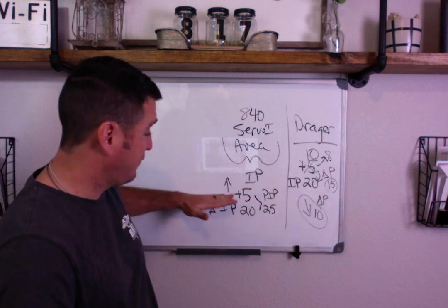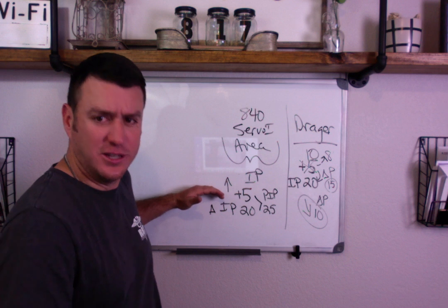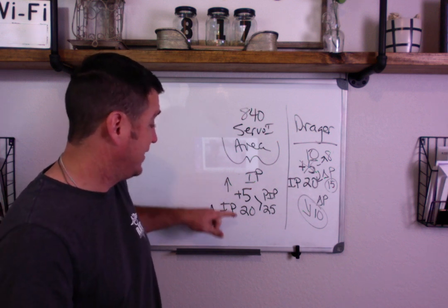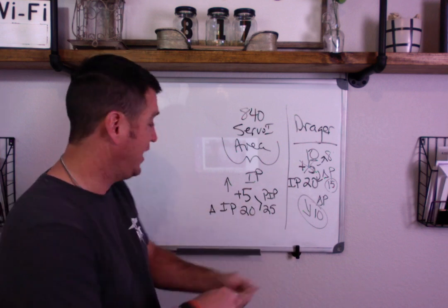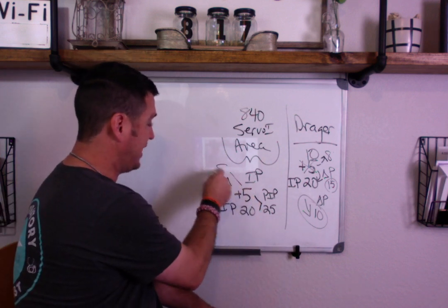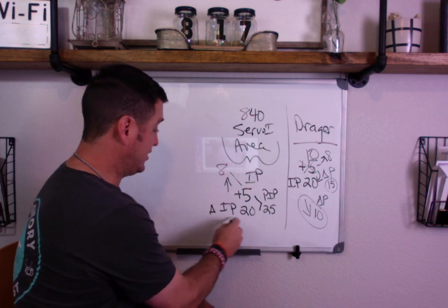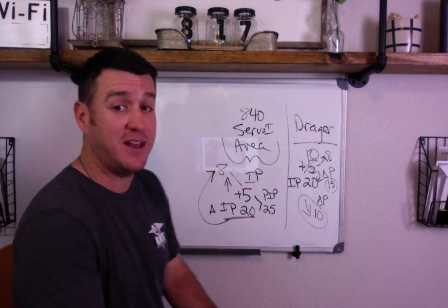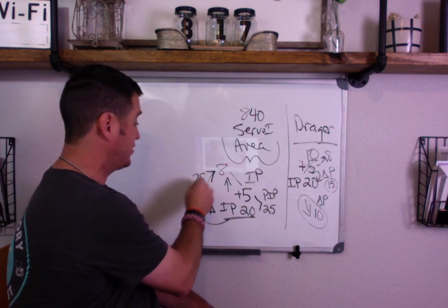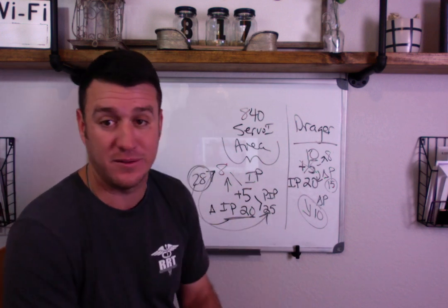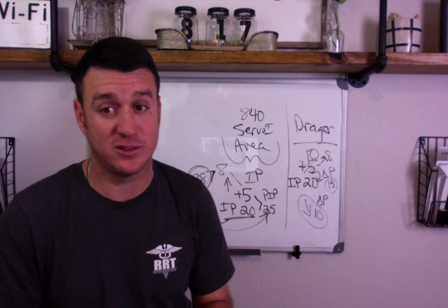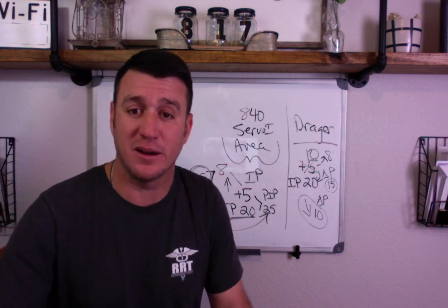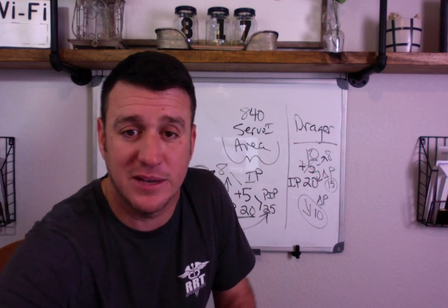Auto PEEP will not affect the amount of pressure delivered on a delta P ventilator — it just raises the PIP instead. If auto PEEP goes up to 8, you're still adding 20 cmH2O, so your PIP becomes 28 instead of 25. You need to ask yourself why. Set your peak inspiratory pressure, maneuver it to achieve 6 to 8 mLs per kilo — 4 to 6 for ARDS. Know your equipment, because they function differently. Hope I answered your questions and hope everybody's having a great day.